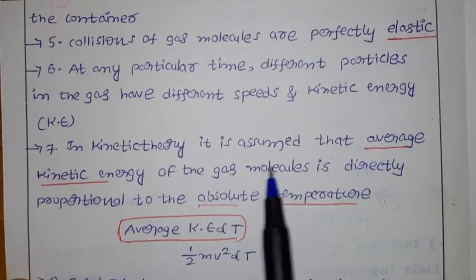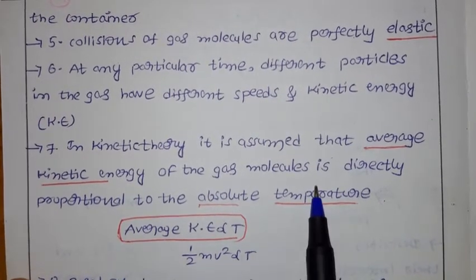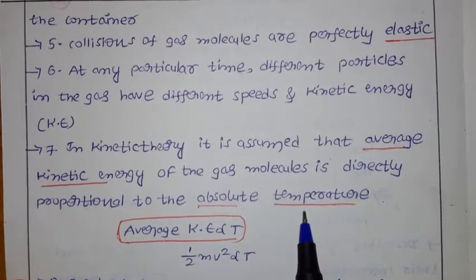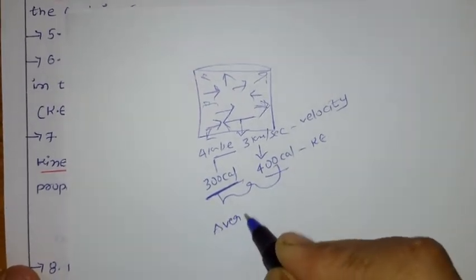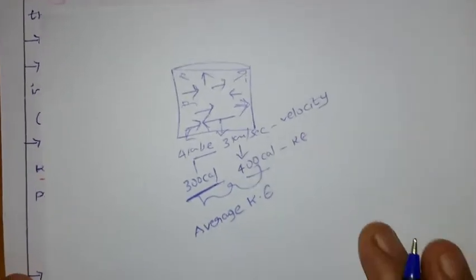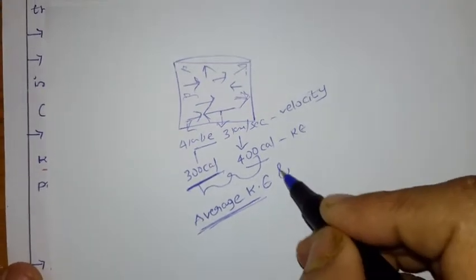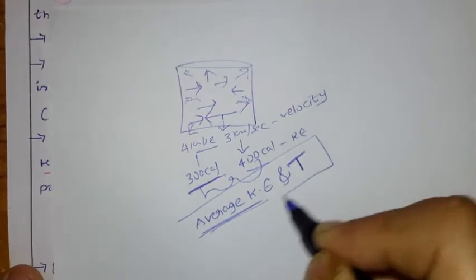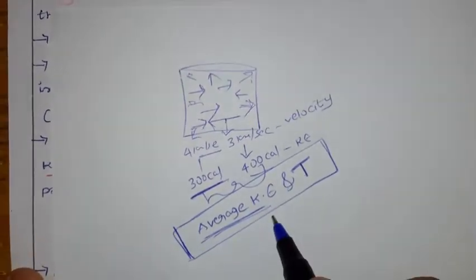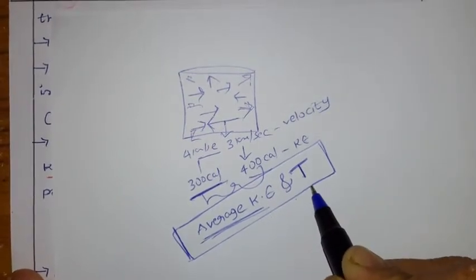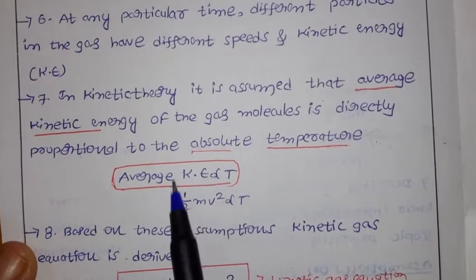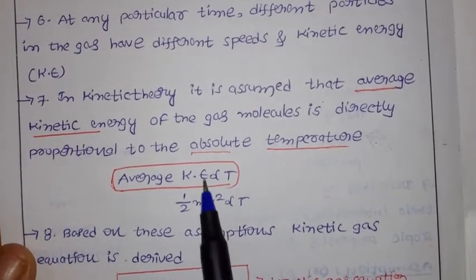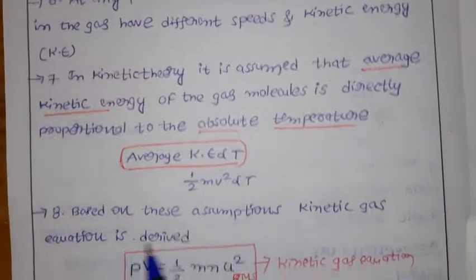The seventh postulate is: the average kinetic energy of gas molecules is directly proportional to the absolute temperature. Since different particles have different kinetic energies, we take the average kinetic energy. According to kinetic molecular theory, this average kinetic energy is directly proportional to absolute temperature. Remember: average kinetic energy ∝ temperature, where kinetic energy = ½mv².